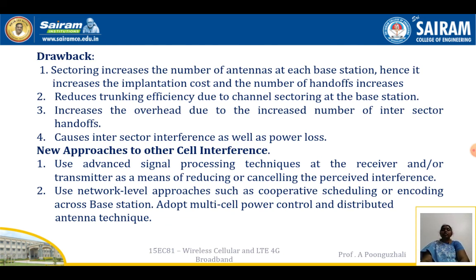The drawbacks of sectoring are: it increases the number of antennas because each sector within a cell requires its own antenna, increasing implementation cost. The number of handoffs also increases. Additionally, sectoring reduces trunking efficiency due to channel sectoring at the base station, and increases overhead due to the increased number of inter-sector handoffs, causing inter-sector interference and power loss.